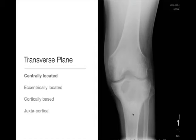In this case, we have a geographic lytic lesion with a narrow zone of transition, non-sclerotic border, which is centered in the proximal tibia — in the metaphysis and into the epiphysis as well. So this is an example of a centrally located lesion.